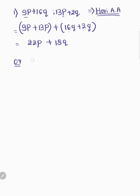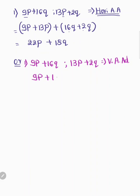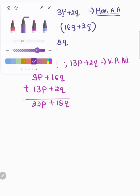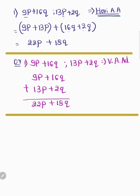That is the horizontal arrangement answer. Now let us write question one in vertical arrangement: write 9p plus 16q, then underneath write 13p plus 2q. Add the p variables: 9 plus 13 equals 22p. Add the q variables: 16 plus 2 equals 18q. Both the horizontal and vertical methods give the same answer.